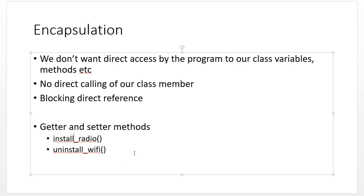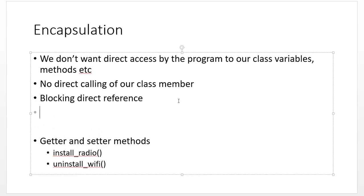A caller just knows that calling installRadio will work — they don't know the implementation details. This is done through getter and setter methods, which get or set certain variables and values. With encapsulation, most class members are declared private — a private member cannot be accessed by any other object or class outside of its original class. Getter and setter methods serve as the public interfaces to those private members.